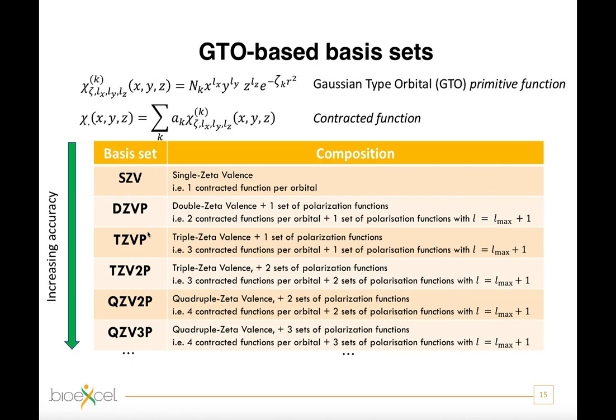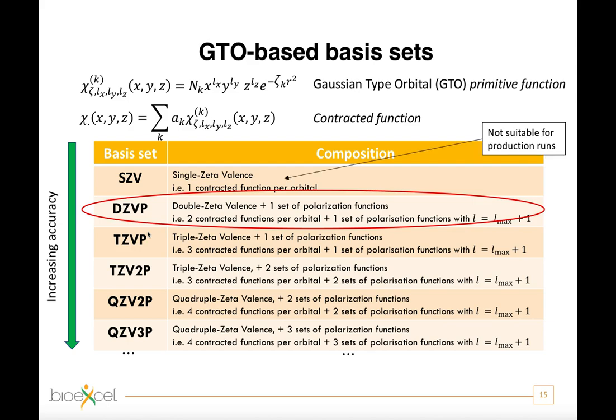In the tutorials, a double zeta valence basis set with a single set of polarization function is used. In fact, this basis set is the smallest basis set commonly considered suitable for production runs.